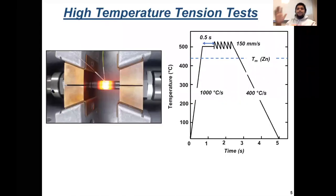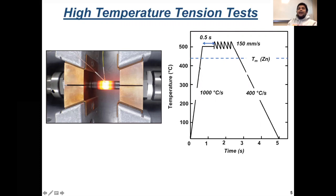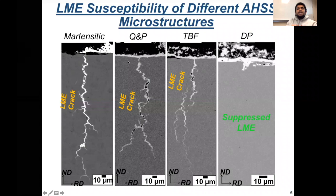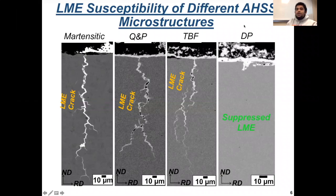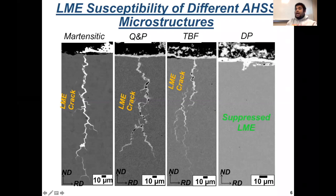We performed hot tension tests using zinc-coated specimens of these four microstructures at a temperature of 500 degrees C, which is above the zinc melting temperature, and we had very interesting observations. We observed that the martensitic, Q&P, and TBF steels all formed LME cracks at this temperature, whereas the dual-phase steel showed very small LME cracks, thereby exhibiting a suppressed LME behavior. These results suggest that there may be some boundary cracking in the martensitic, Q&P, or TBF steels that is not present in a predominant form in the dual-phase microstructure.